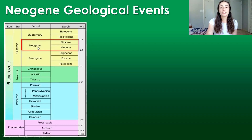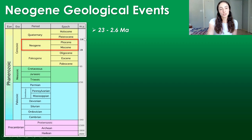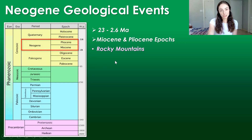The Neogene is a period within the Cenozoic era that went from around 23 to 2.6 million years ago. It includes the Miocene and Pliocene epochs. And in terms of geologic events: